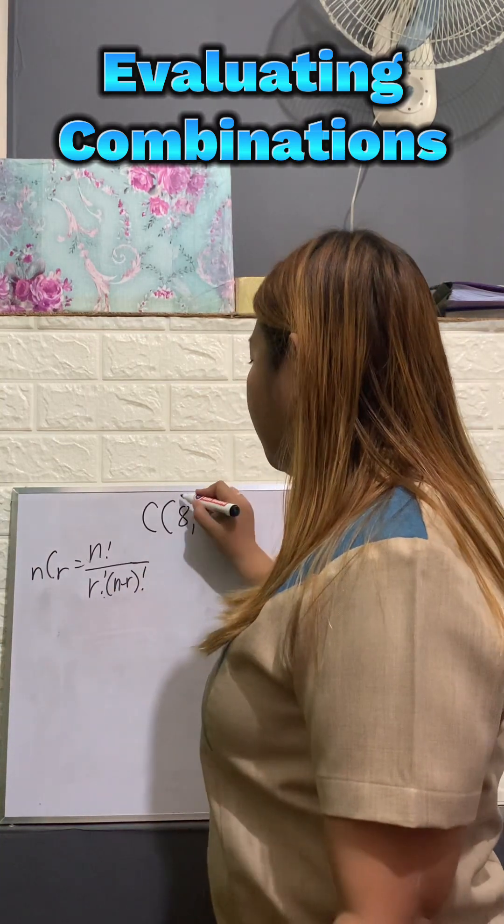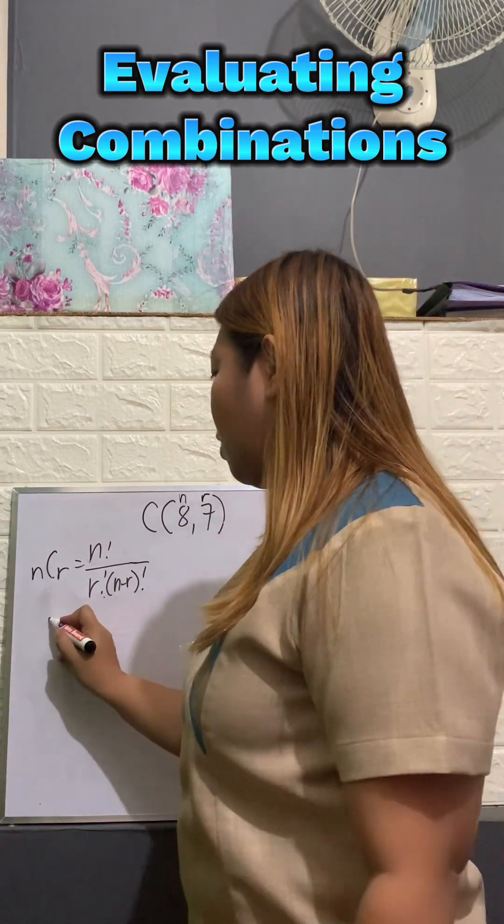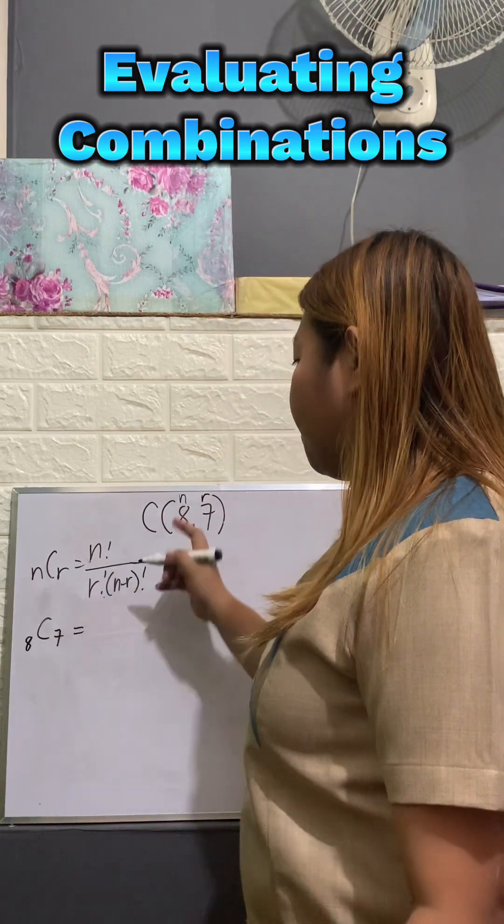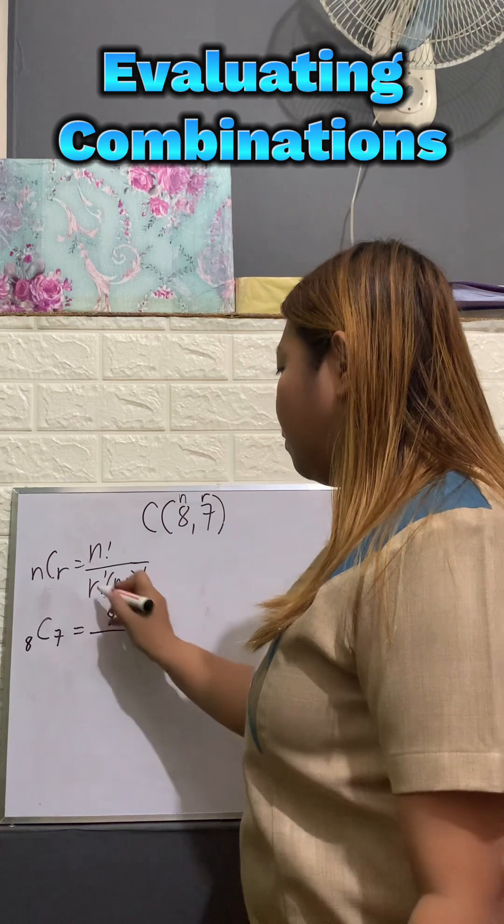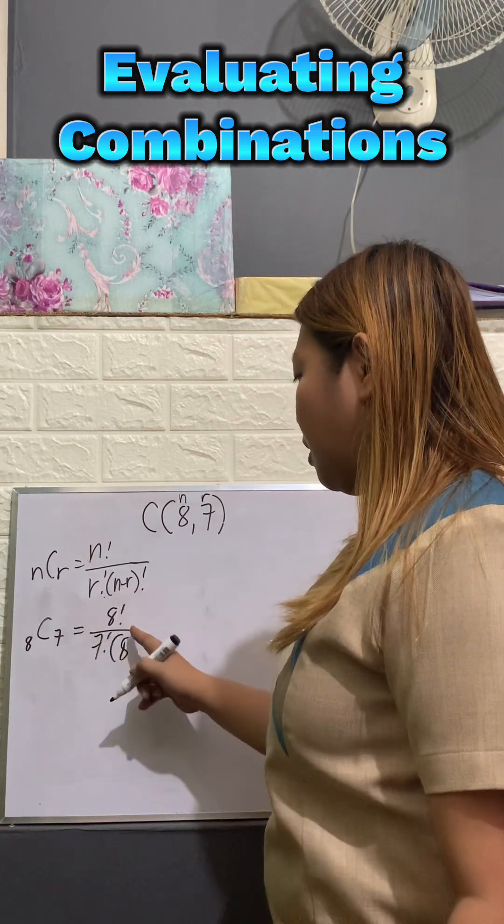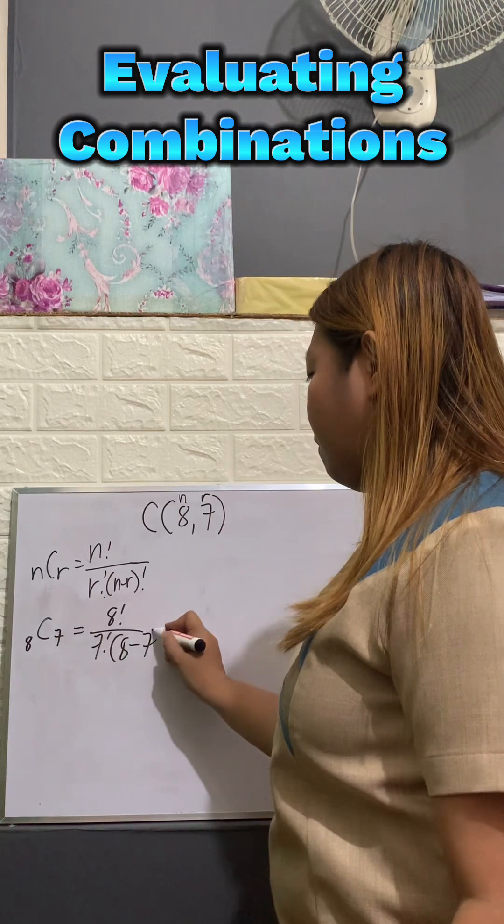So let's substitute this is our n and this is our r. So the combination of 8 taken 7 at a time is equal to our n is 8 factorial over r is 7 factorial times 8 which is our n minus 7 factorial.